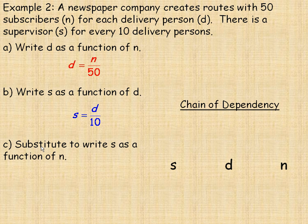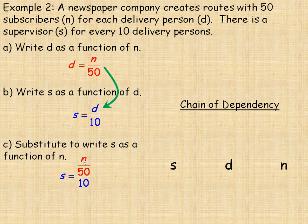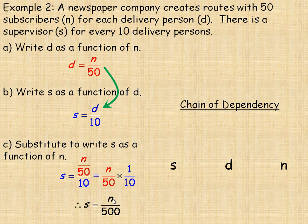In part c, we compose the functions to write s as a function of n directly, bypassing d. We substitute d equals n over 50 into s equals d over 10, placing n over 50 in place of d. Simplifying the complex fraction by multiplying n over 50 by 1 over 10 gives s equals n over 500.